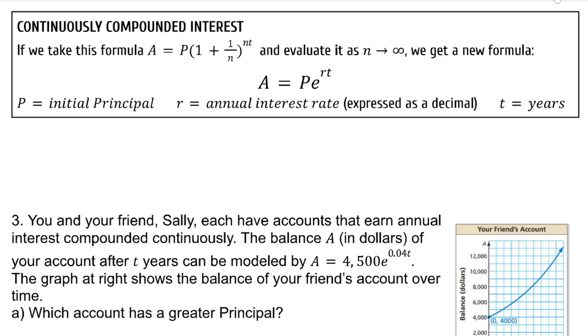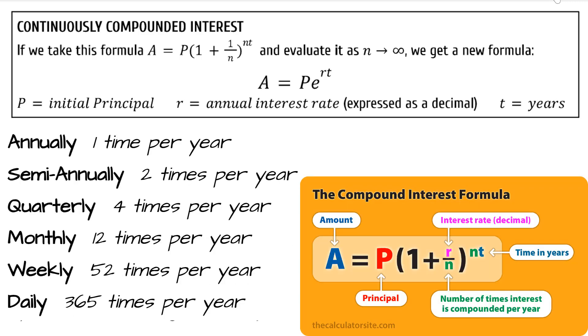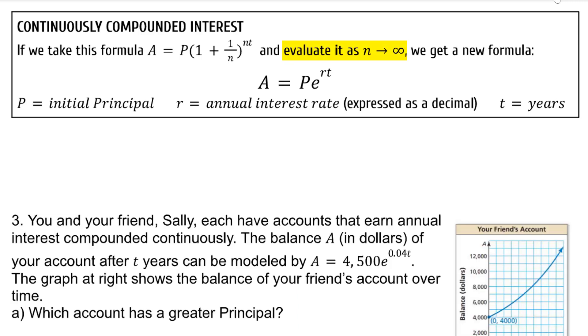So what was that Bernoulli guy talking about? If you continuously compounded the interest, instead of getting it compounded annually or semi-annually or quarterly or monthly or weekly or daily, this is continuously compounded interest. If we take the formula for compounded interest and we evaluate it as the number of times per year compounded approaches infinity, we get a new formula: A = Pe^(rt).